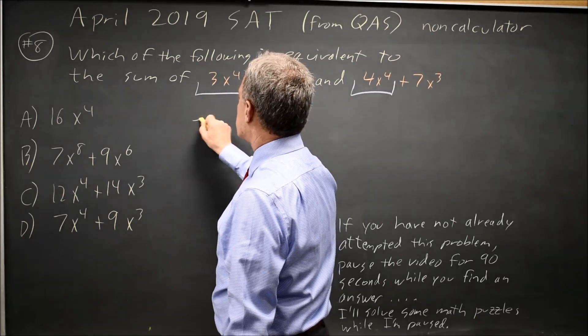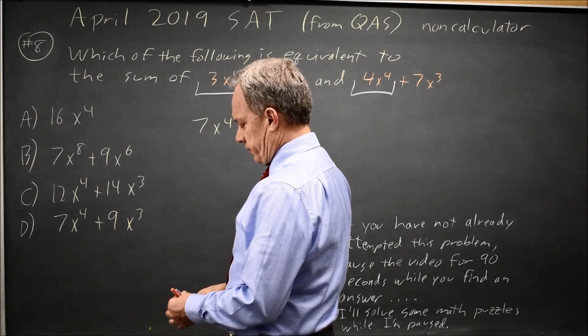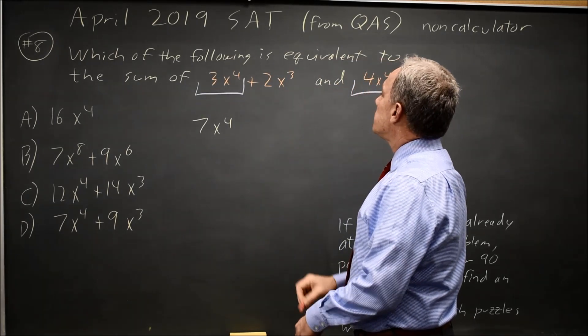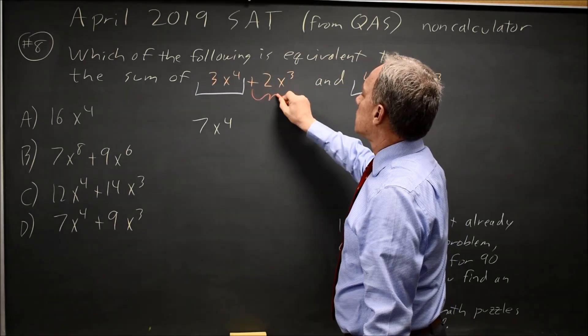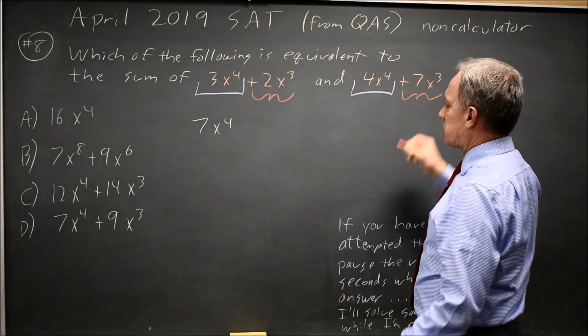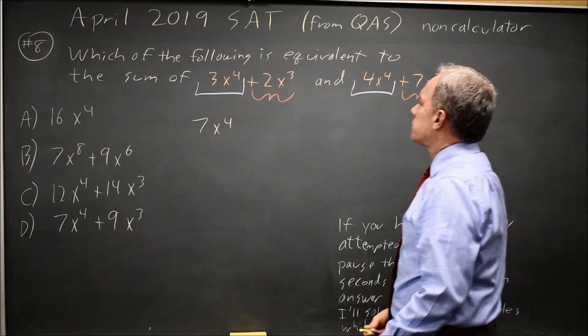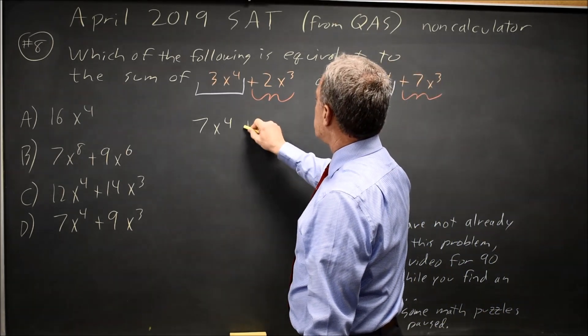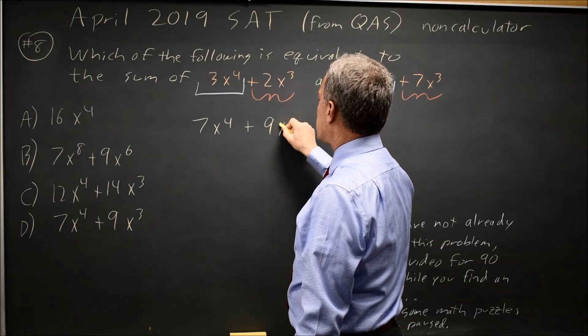3x to the 4th plus 4x to the 4th is 7x to the 4th, and then we have 2x cubed and 7x cubed. Those are like terms, so we're going to combine them, and 2x cubed plus 7x cubed is 9x cubed.